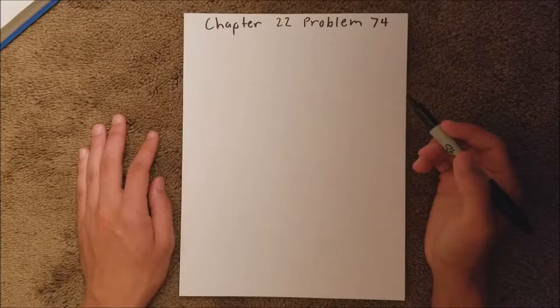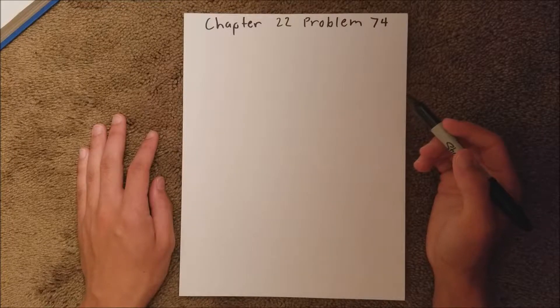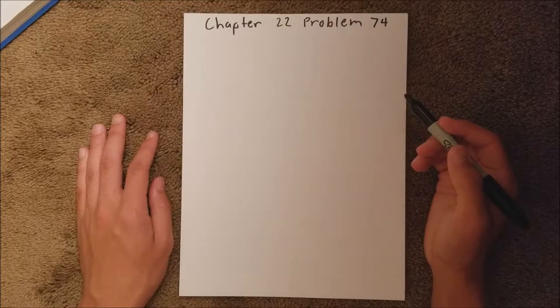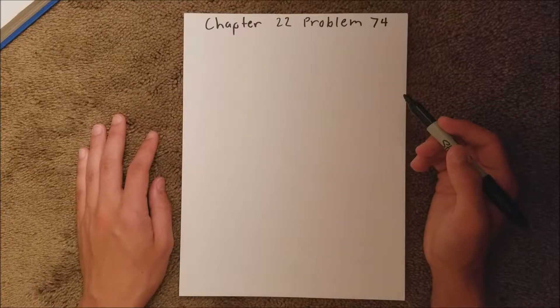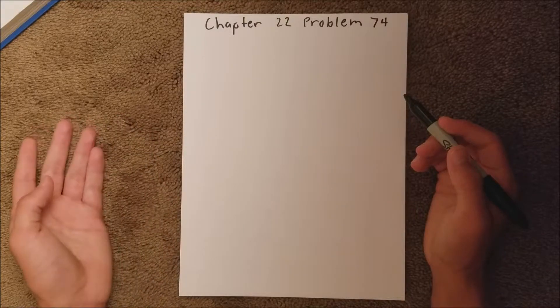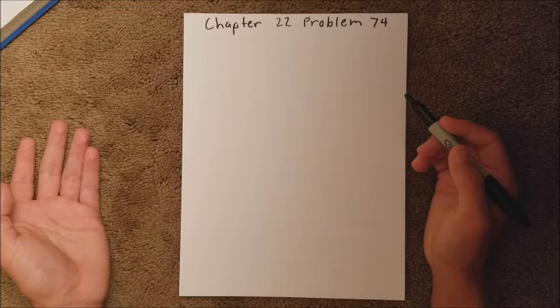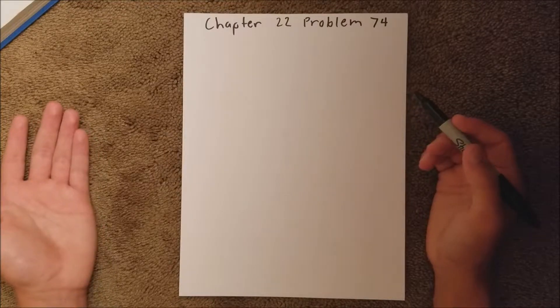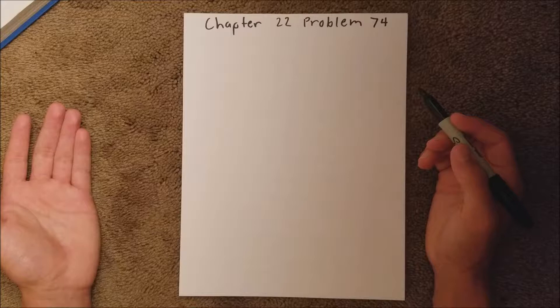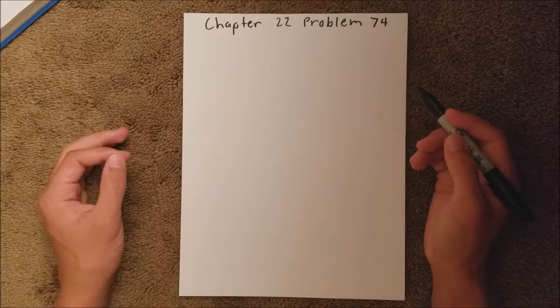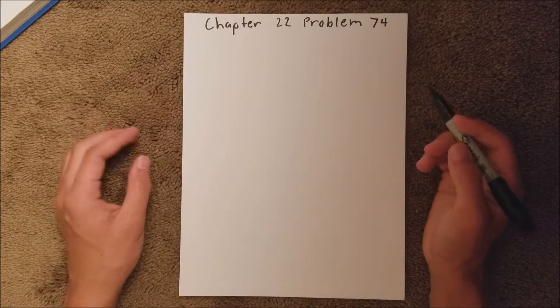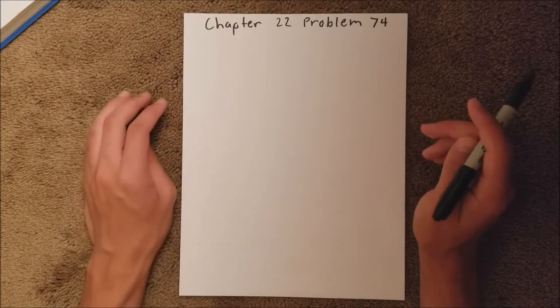Chapter 22 is all about electric fields, and in Problem 74, we are asked to find the magnitude of the acceleration of an electron that is in an electric field, and we are given the magnitude of that electric field. That's just for Part A.